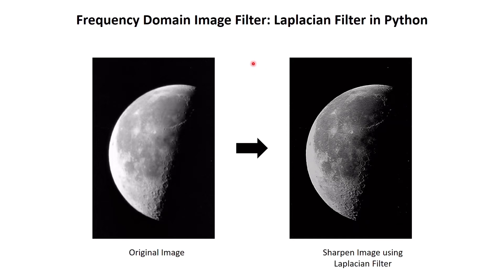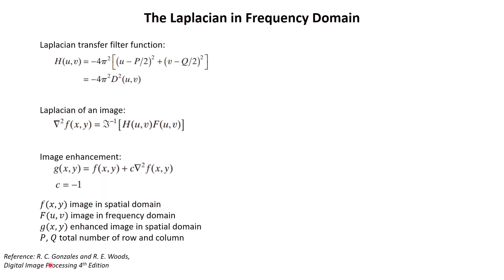Hello everybody. In this video we will learn how to do an image filter in frequency domain using a Laplacian filter. The Laplacian filter is a filter we can use to enhance an image and make it become sharper. According to the digital image processing textbook, this is the step of image enhancement using the Laplacian filter in frequency domain.